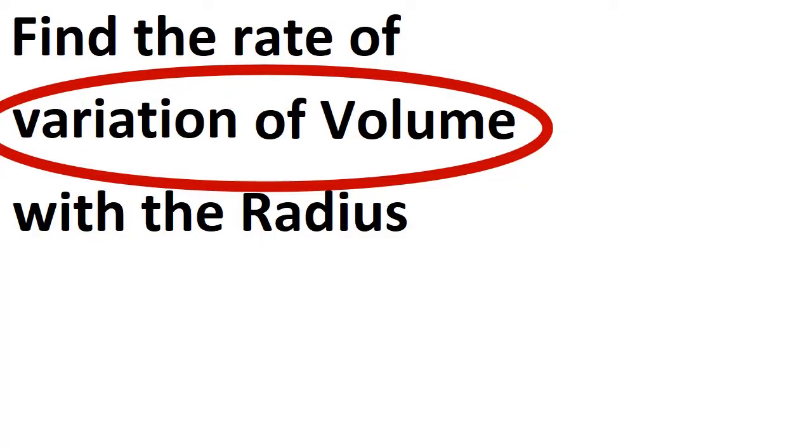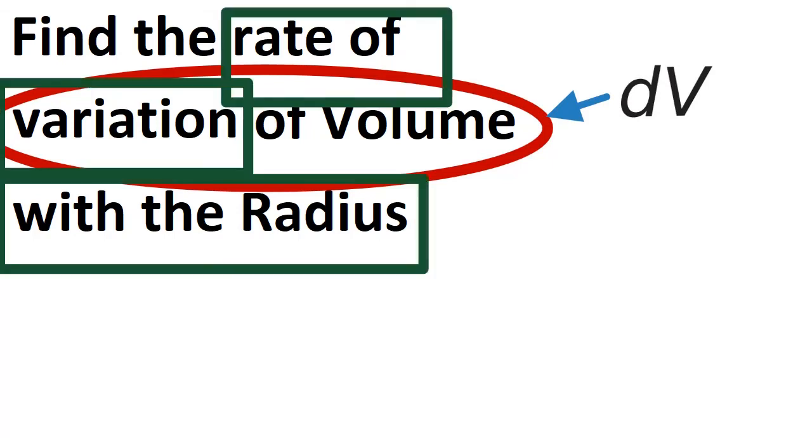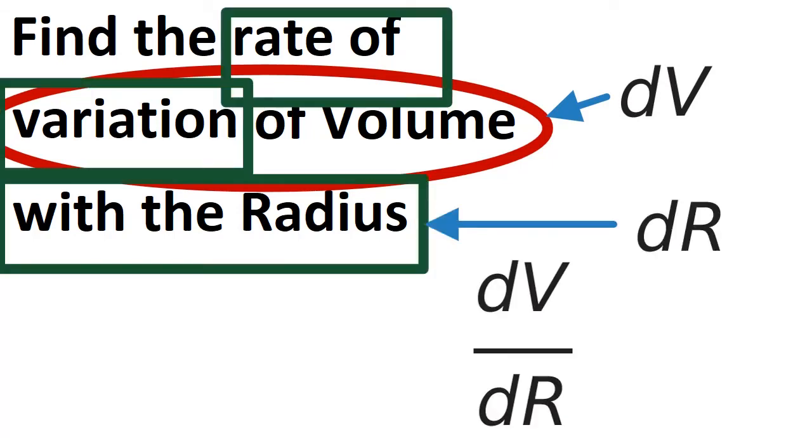So what are we looking for? The variation of the volume, that is dV, and the rate that it changes with the radius, that is dV by dR. So that is what we're after.